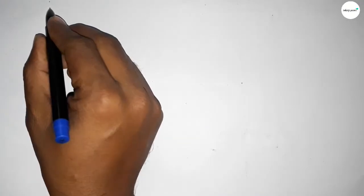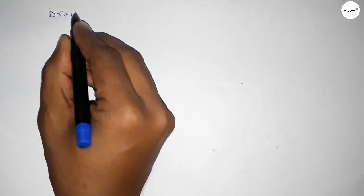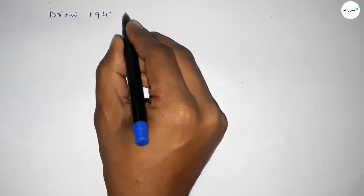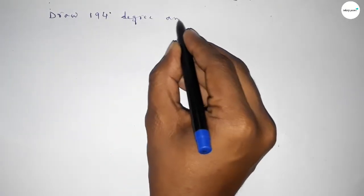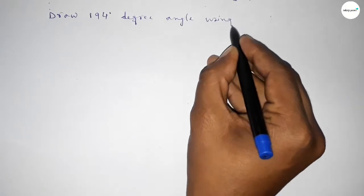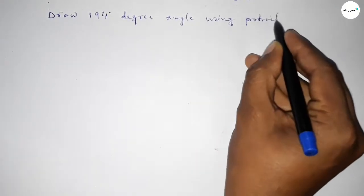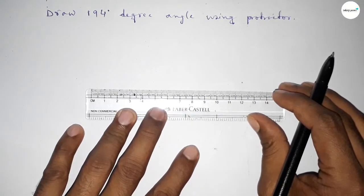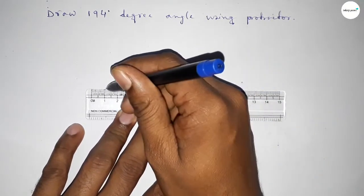Hi everyone, welcome to SI Share Classes. Today in this video, we have to draw a 194-degree angle using a protractor. Let's start the video. First of all, we have to draw a straight line of any length.